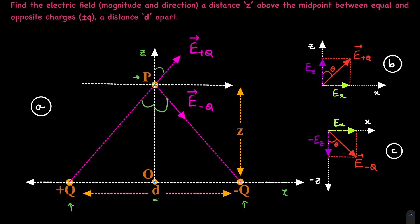So how do we do that? Let's find the field due to charge plus q — let's call it E plus q — and the field is pointing in the direction away from the charge. Let's also find the field due to minus q and call it E minus q. The vertical separation from here to here is z. Now we need to find the electric field due to both of these charges, E plus q and E minus q, at this point.